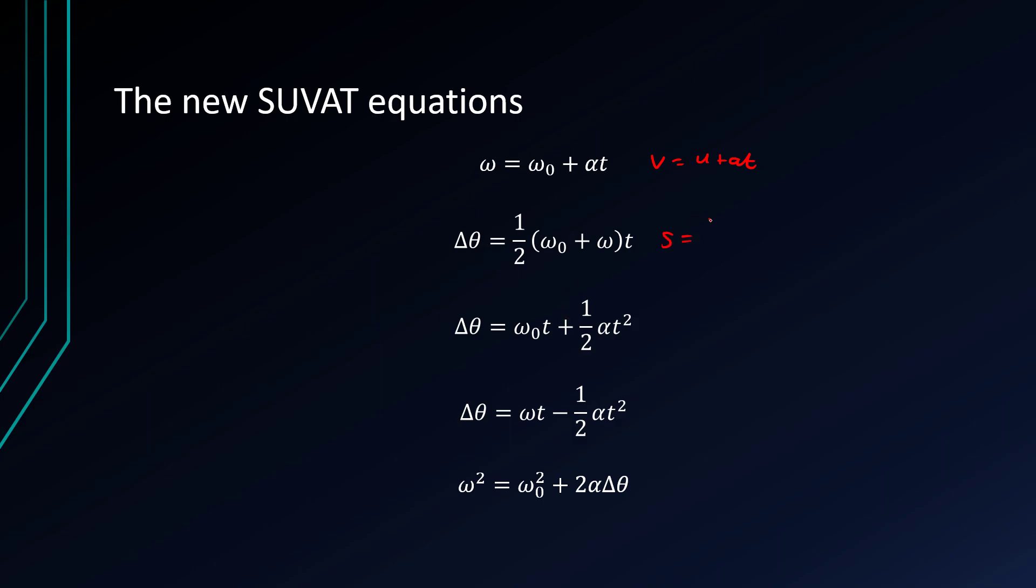The second one comes from S equals a half U plus V T, which means that the change in angle delta theta is a half times omega nought plus omega times T.